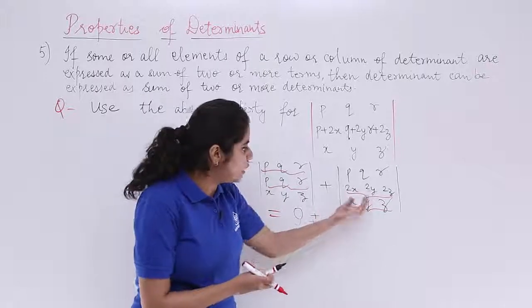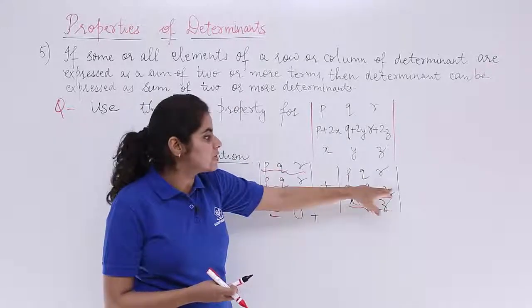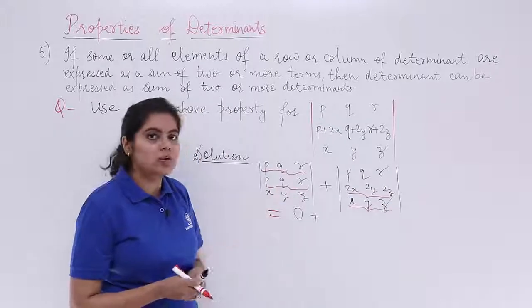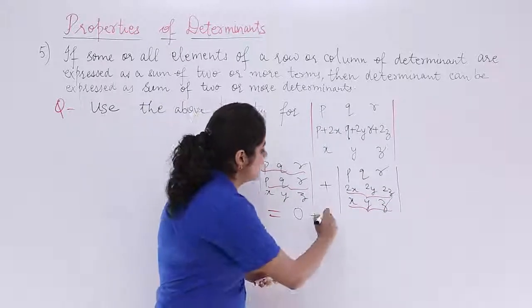Why? Because two can be taken out as common. So if two is common, XYZ, XYZ identical rows again. So the answer here also is zero.